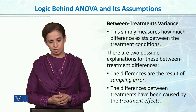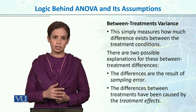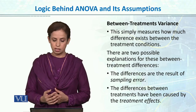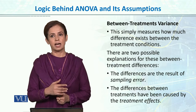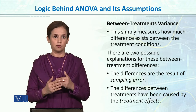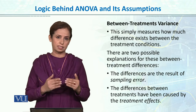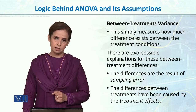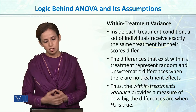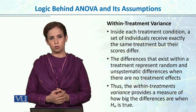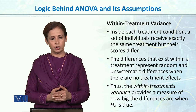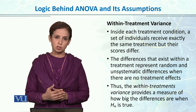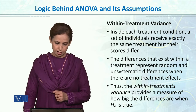Between-treatment variance simply measures how much difference exists between the treatment conditions. There are two possible explanations for these between-treatment differences: the differences are the result of sampling error, or the differences are the result of the treatment actually working. If variability in driving performance is coming from use of phone, then those are treatment effects. Otherwise, those differences are due to error — individual differences and other factors explaining driving performance, such as learning capacity, intelligence, personality, and driving experience.